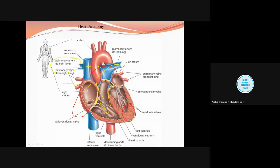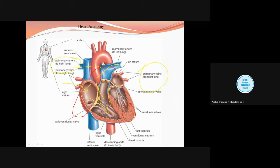Blood enters the heart two times — once deoxygenated blood from the body, and once oxygenated blood from the lungs. That is why this type of circulation is called double circulation. The pulmonary veins are the only veins in the body which carry oxygenated blood. Like in birds, there are four pulmonary veins — two from the right side of the lung and two from the left side — bringing oxygenated blood back to the heart.